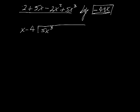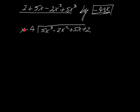The reordered polynomial inside is 5x cubed minus 2x squared plus 5x plus 2. When dividing, the terms must be arranged from highest exponent to lowest: x cubed, x squared, x to the first, and then the constant — that's 3, 2, 1, 0 — and it cannot skip any exponent.